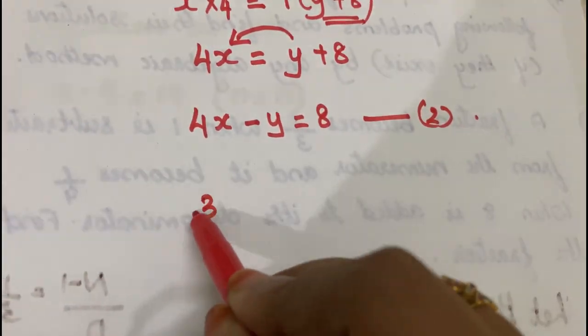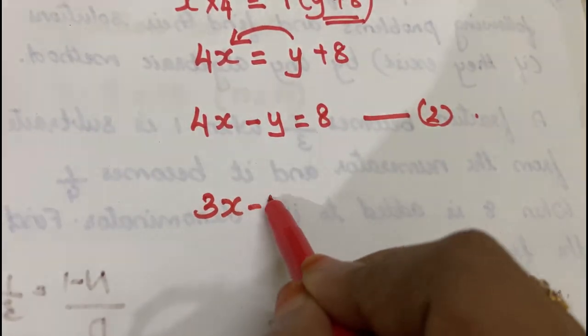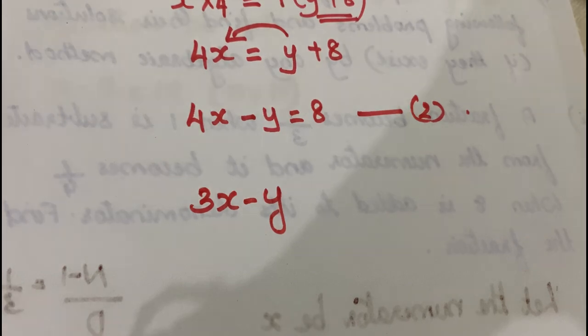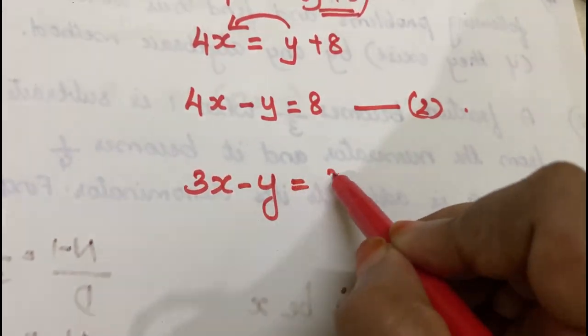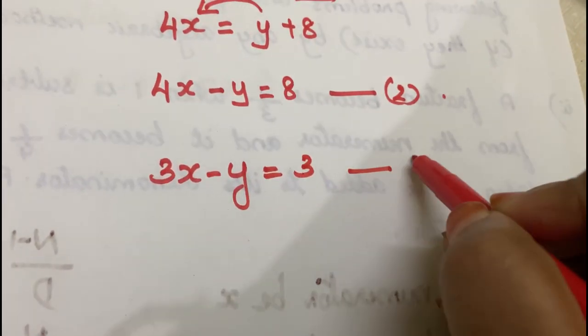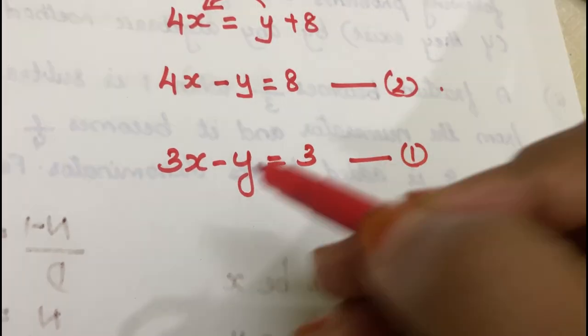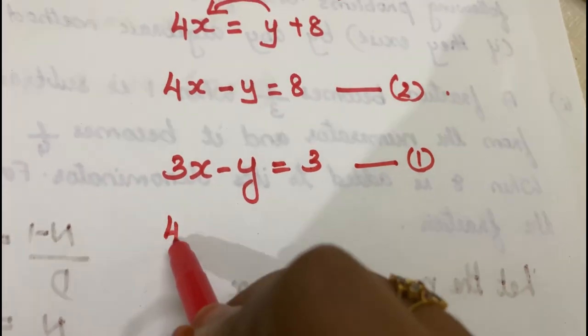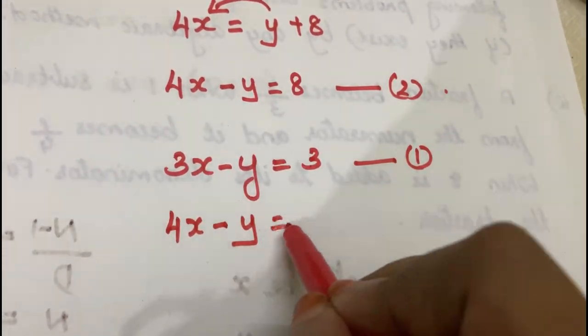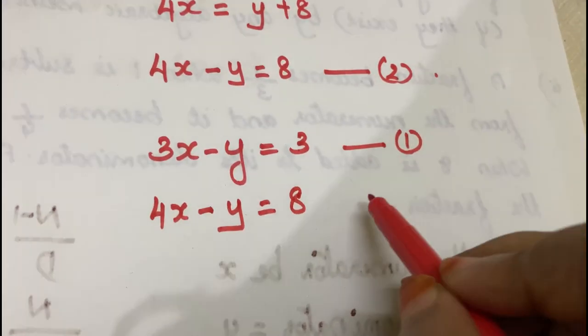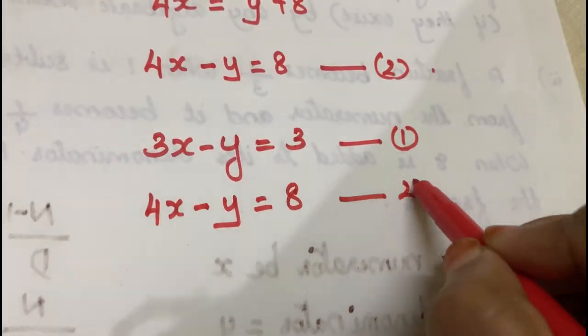The first equation is 3x minus y equals 3. The second equation is 4x minus y equals 8.